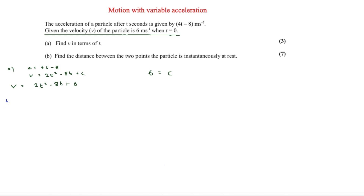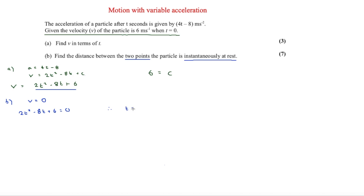The second part asks for the distance between the two points where the particle is instantaneously at rest. When instantaneously at rest, v = 0. Setting 2t² − 8t + 6 = 0 and solving this quadratic gives t = 1 and t = 3. So the particle is at rest at one second and at three seconds.